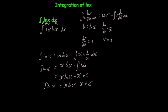Just to recap: to find the integral of ln(x), you use integration by parts. You multiply it by 1, call the ln part u and the 1 dx part dv, then work out the values, substitute them in, and you'll find the answer to be x·ln(x) minus x plus C.